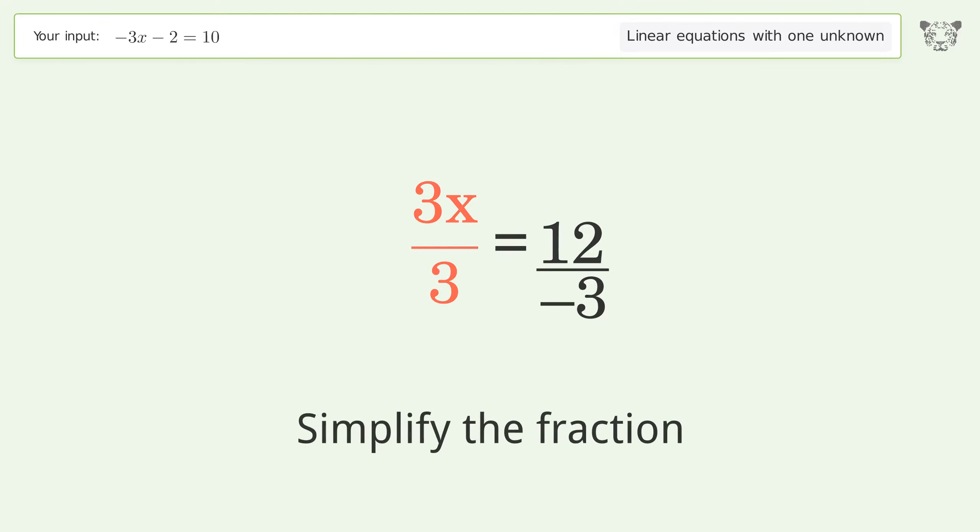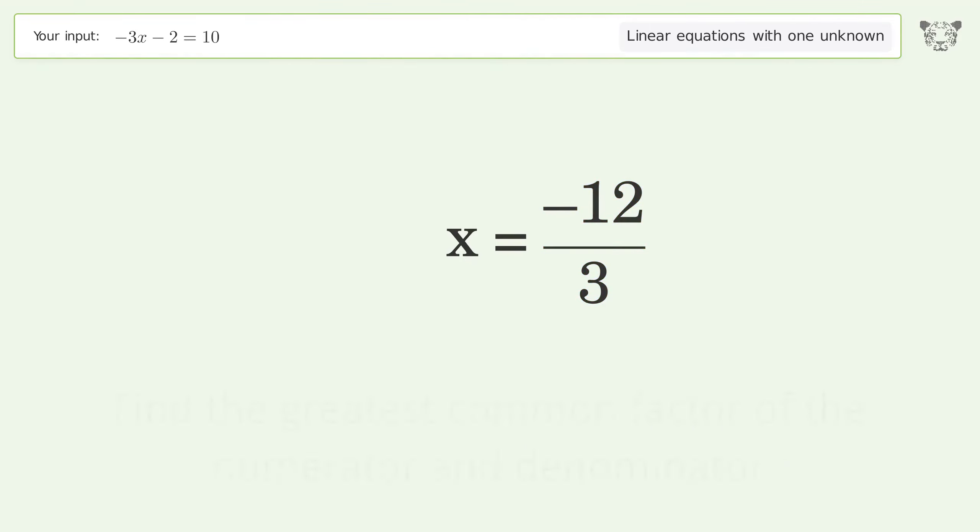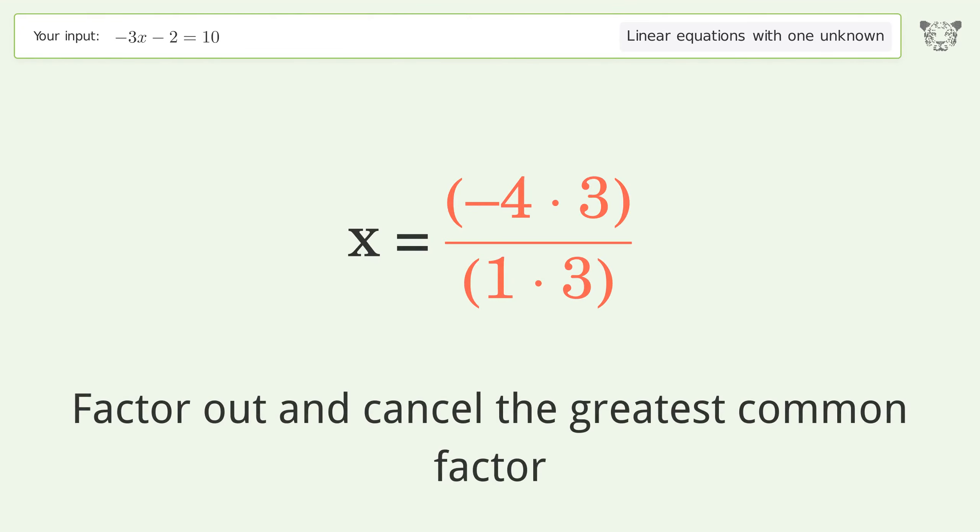Simplify the fraction. Move the negative sign from the denominator to the numerator. Find the greatest common factor of the numerator and denominator. Factor out and cancel the greatest common factor.